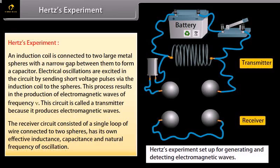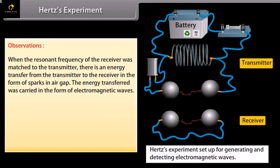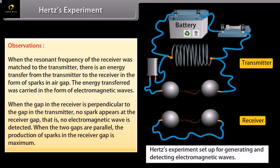The receiver circuit consisted of a single loop of wire connected to two spheres has its own effective inductance, capacitance, and natural frequency of oscillation. When the resonant frequency of the receiver was matched to the transmitter, there is an energy transfer from the transmitter to the receiver in the form of sparks in air gap. The energy transferred was carried in the form of electromagnetic waves. When the gap in the receiver is perpendicular to the gap in the transmitter, no spark appears at the receiver cap, that is, no electromagnetic wave is detected. When the two gaps are parallel, the production of sparks in the receiver gap is maximum.